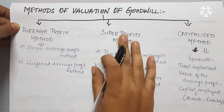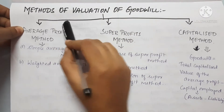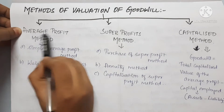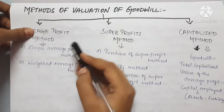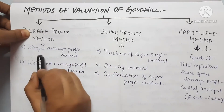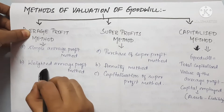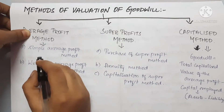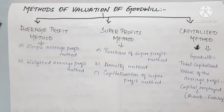Hi friends, we are going to talk about the method of Valuation of Goodwill - the Average Profit Method. There are two methods: Simple Average Profit Method and Weighted Average Profit Method. First, we will see the Simple Average Profit Method.